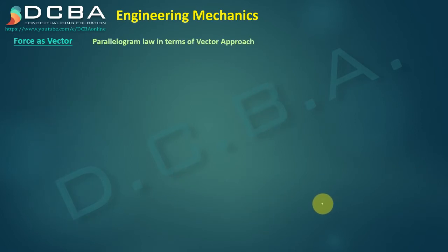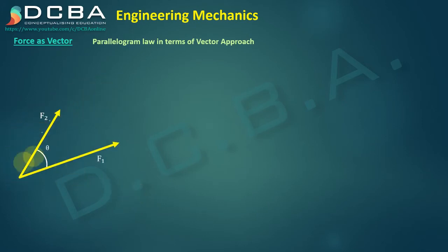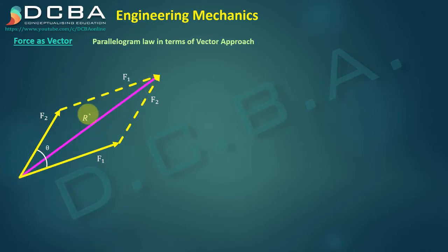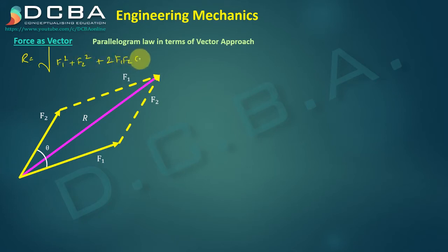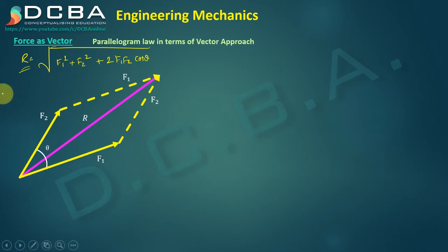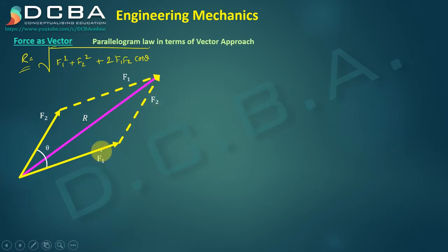In the parallelogram law of forces, we can see that two concurrent forces F1 and F2 form a parallelogram, and the diagonal gives the resultant. According to the parallelogram law, the resultant is the square root of F1 squared plus F2 squared plus 2·F1·F2·cos(theta). This is a large formula, but in vector terms the calculation becomes very easy. To use the vector approach, we first need to convert these forces into their vector forms by finding the horizontal and vertical components of each force.